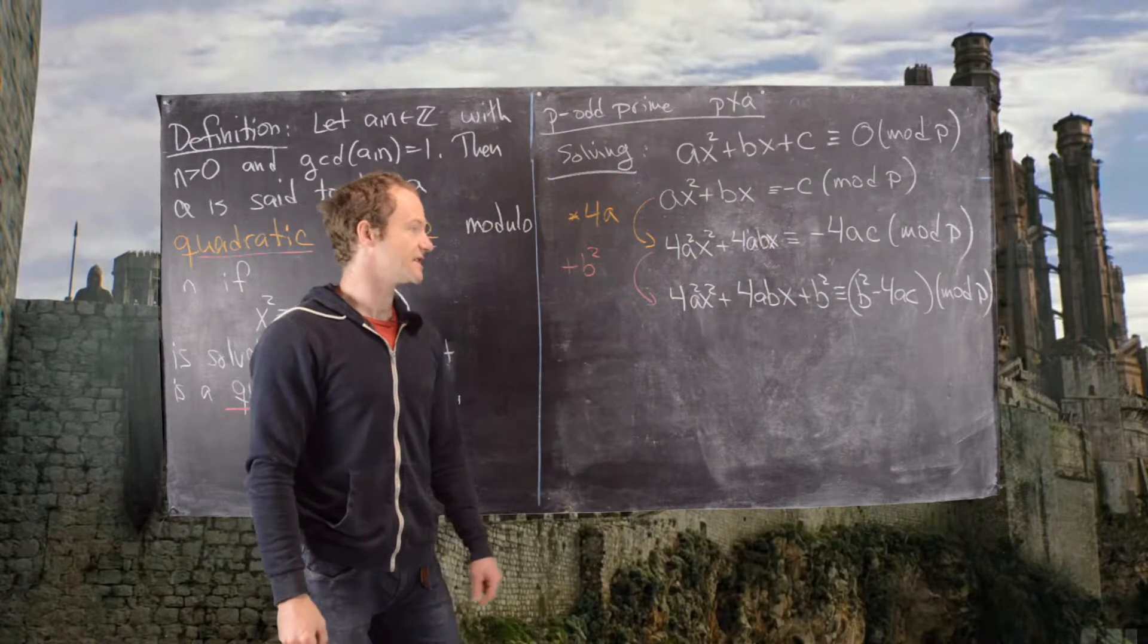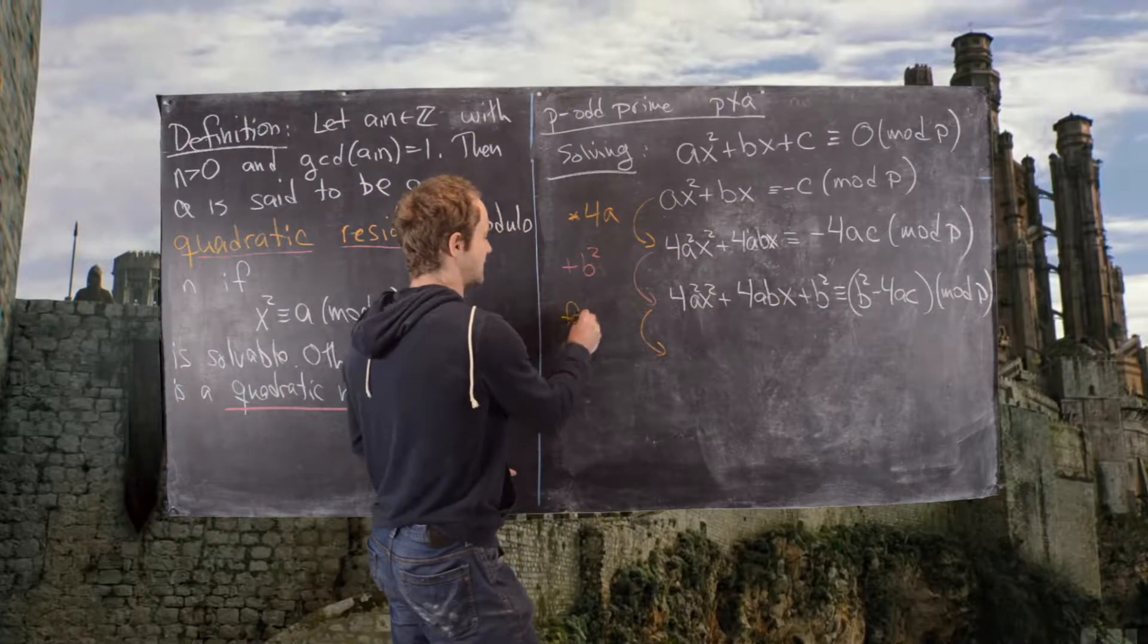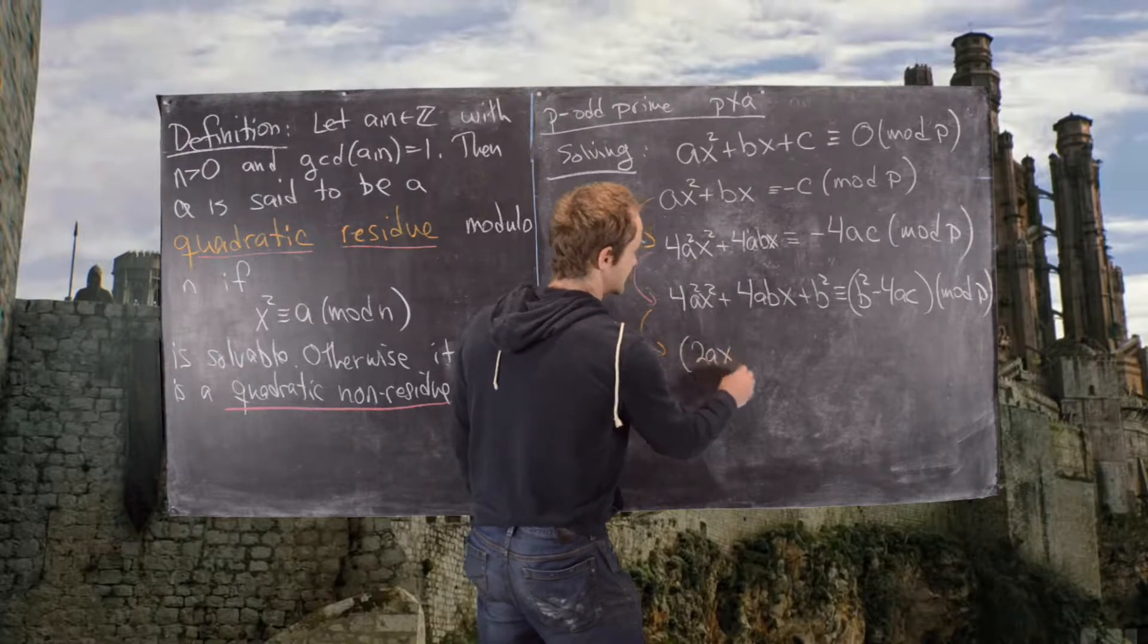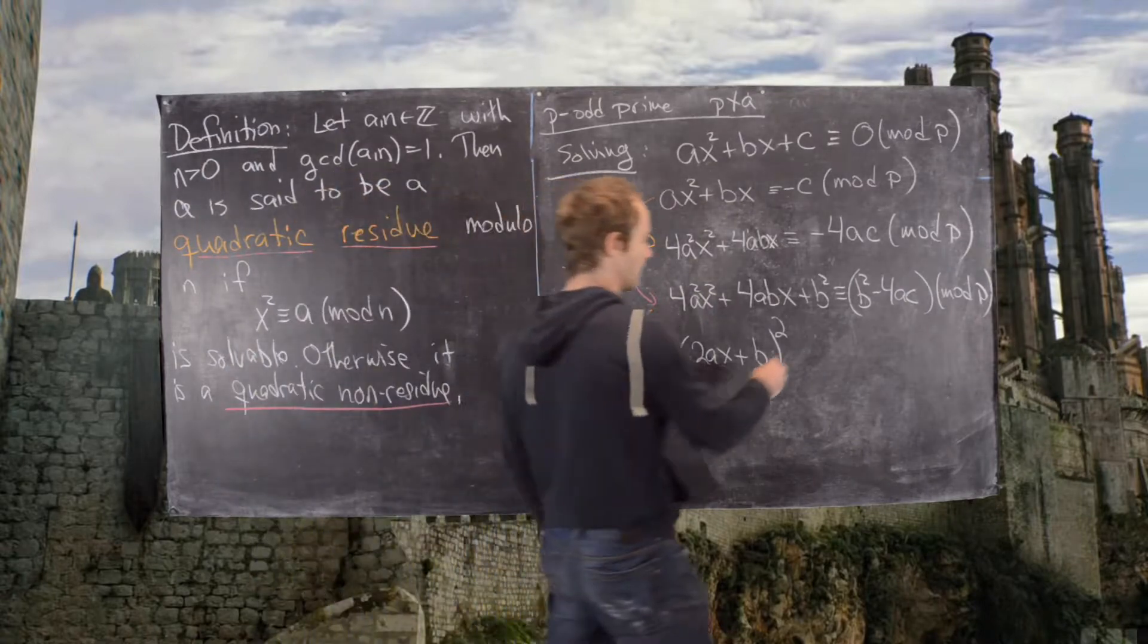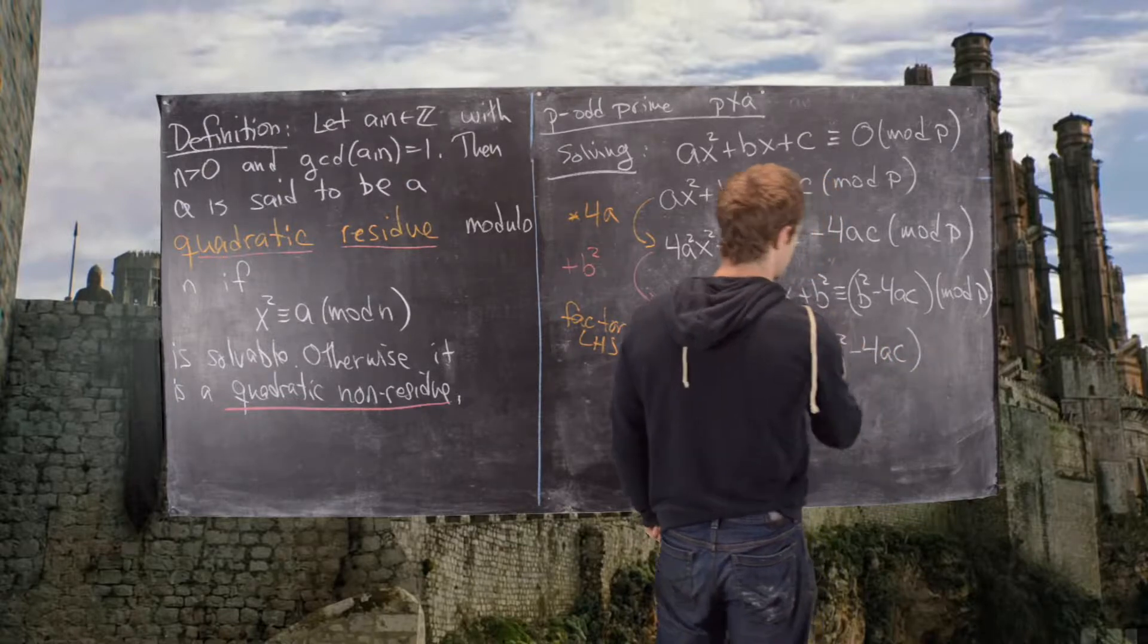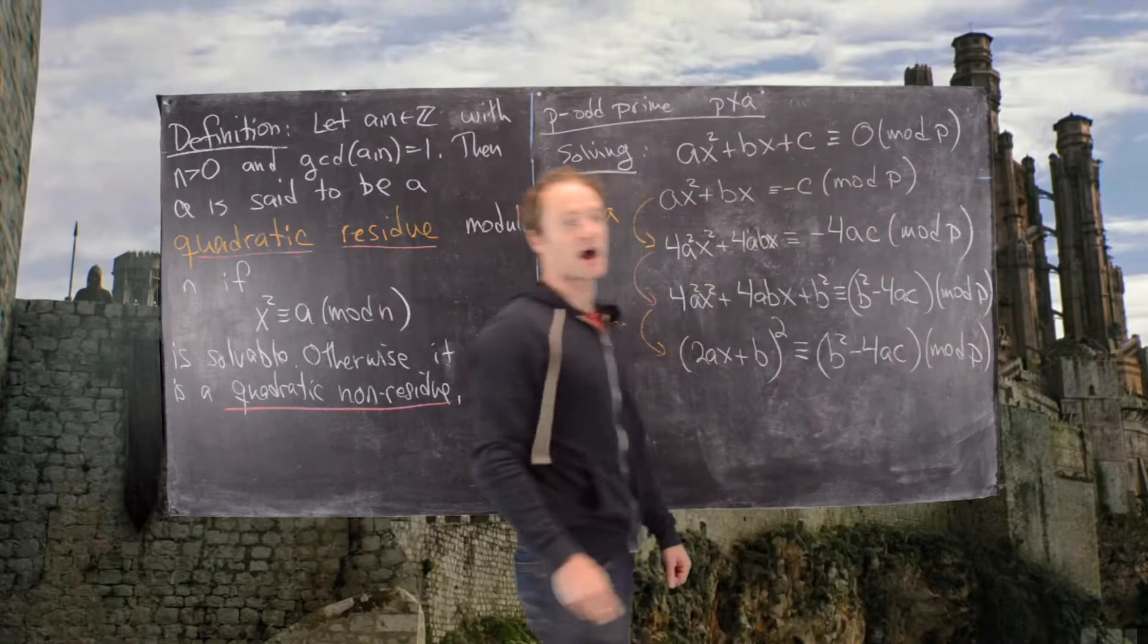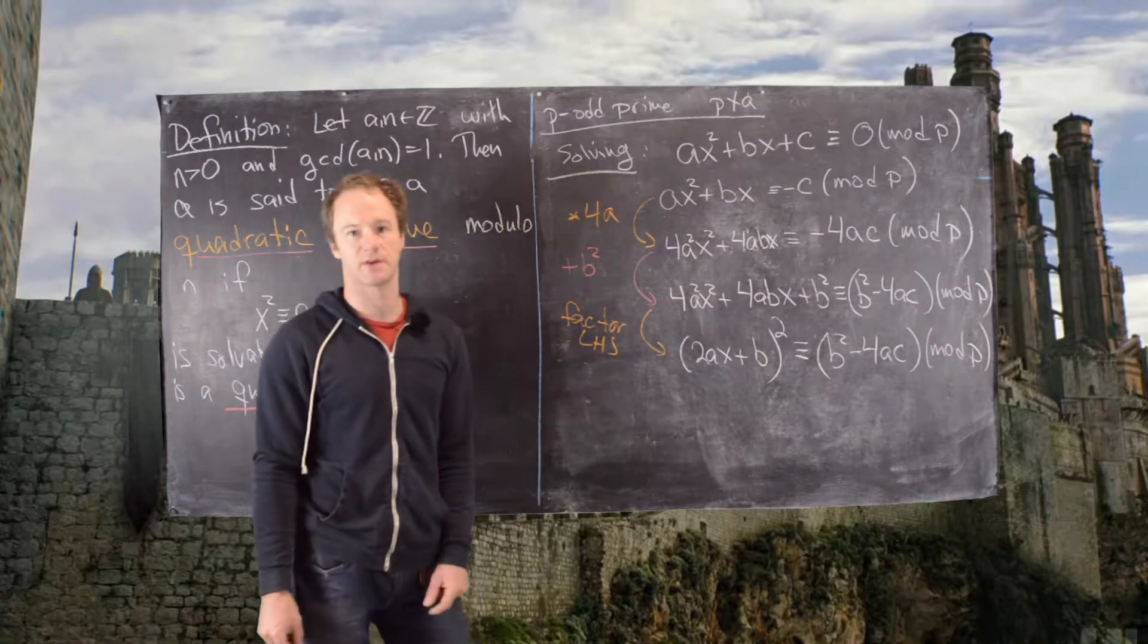But now notice we can factor the left-hand side. So factor the left-hand side, and that gives us 2ax plus b all squared. So notice that's how the left-hand side factors. And now this is congruent to b squared minus 4ac mod p. So now we've got it in the form of a linear term squared is congruent to something else.